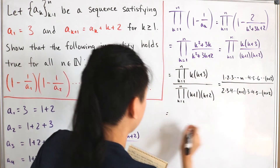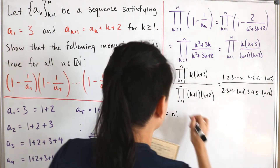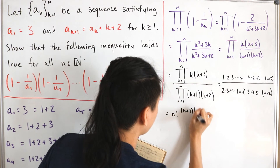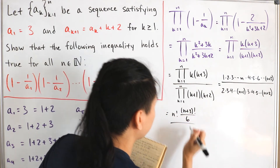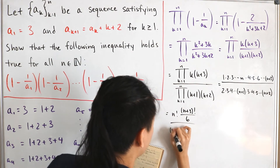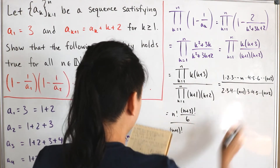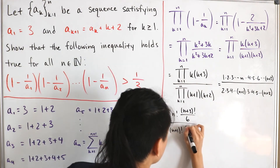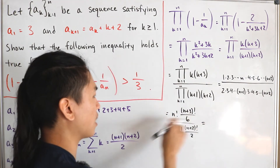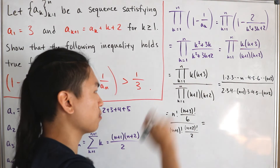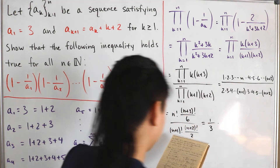The product 1 through n is just n factorial. The product from 4 to n plus 3 is n plus 3 factorial divided by 6 (since we're missing 1 times 2 times 3). For the denominator, the product from 2 to n plus 1 is n plus 1 factorial, and the product from 3 to n plus 2 is n plus 2 factorial divided by 2. Simplifying, we factor out 1 over 6 from the denominator and divide by 1 half, which gives us 1 over 3 as a factor.